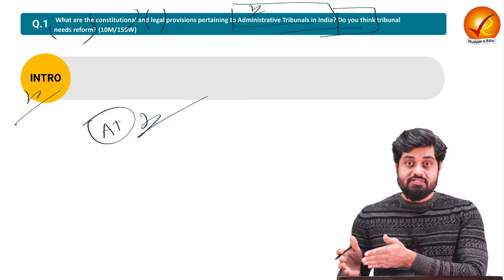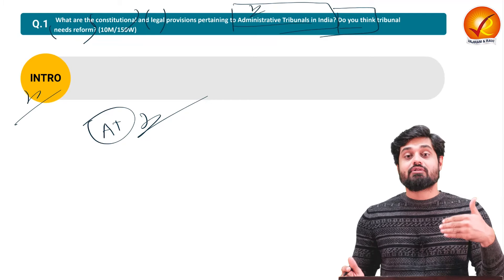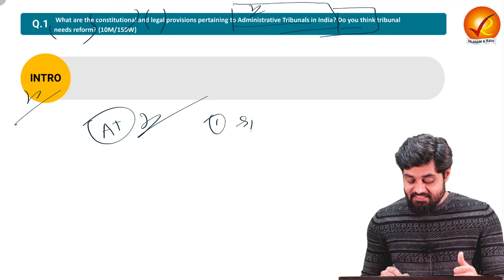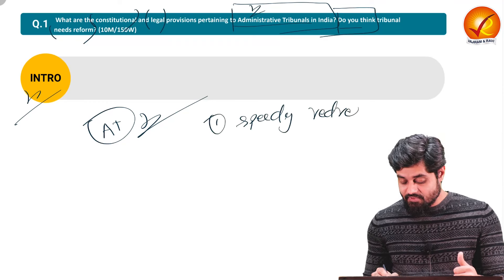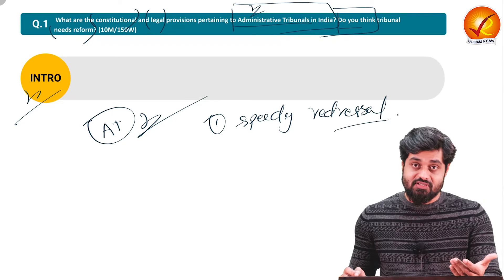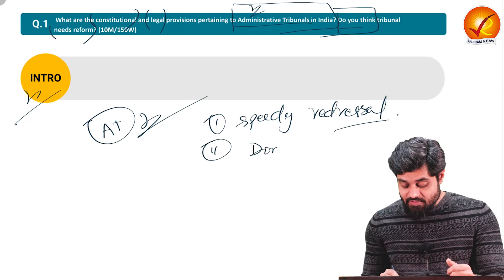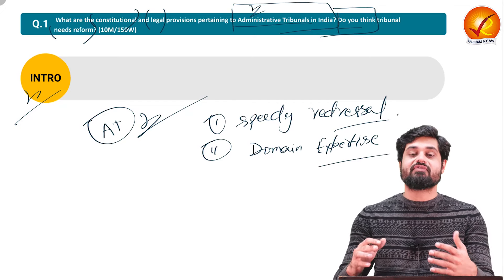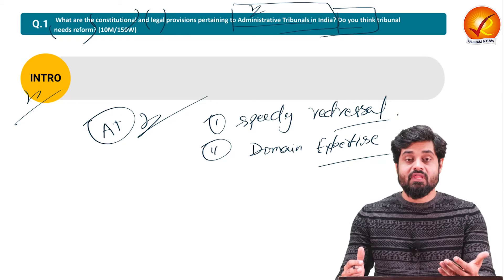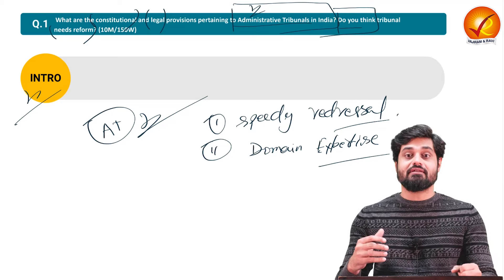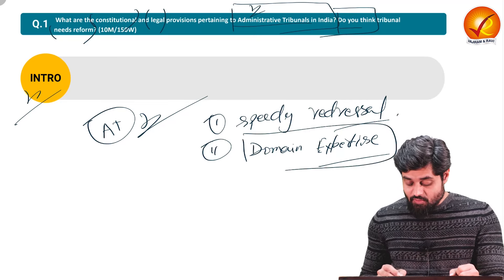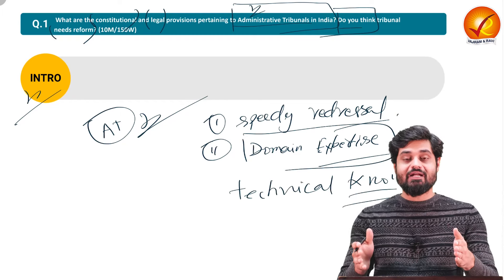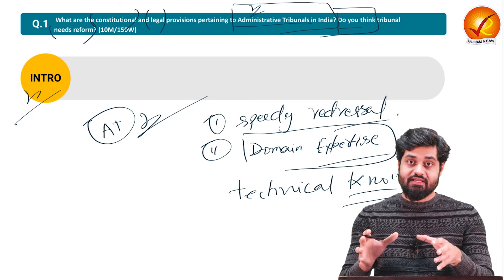We also have a parallel judicial system, so what is the need for tribunals? The traditional judicial system — high courts and the Supreme Court — is already overburdened. Number one is the need for speedy redressal with large numbers of pending cases. Second, there is a requirement for domain expertise, as the complexity of governance has increased, especially in the post-reform era, requiring technical expertise to address certain grievances.